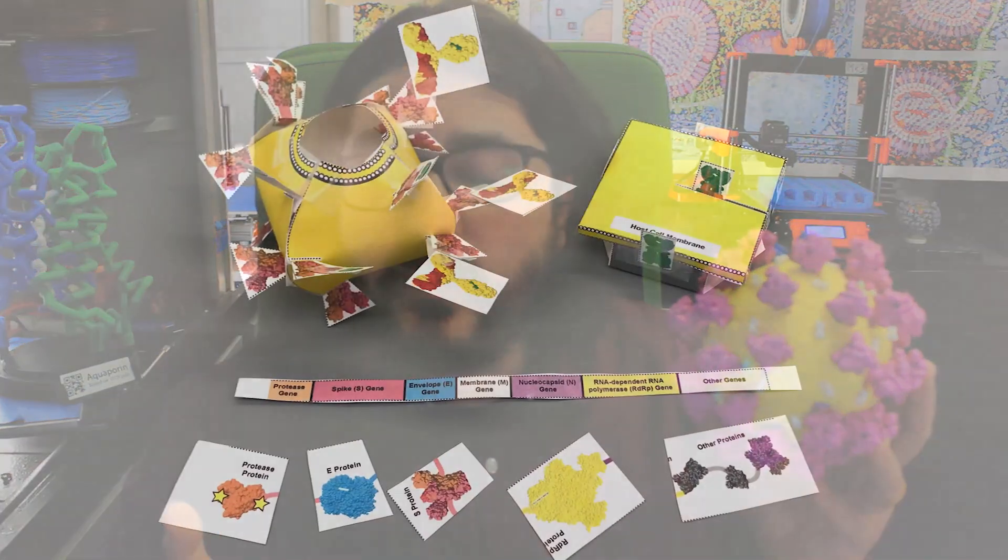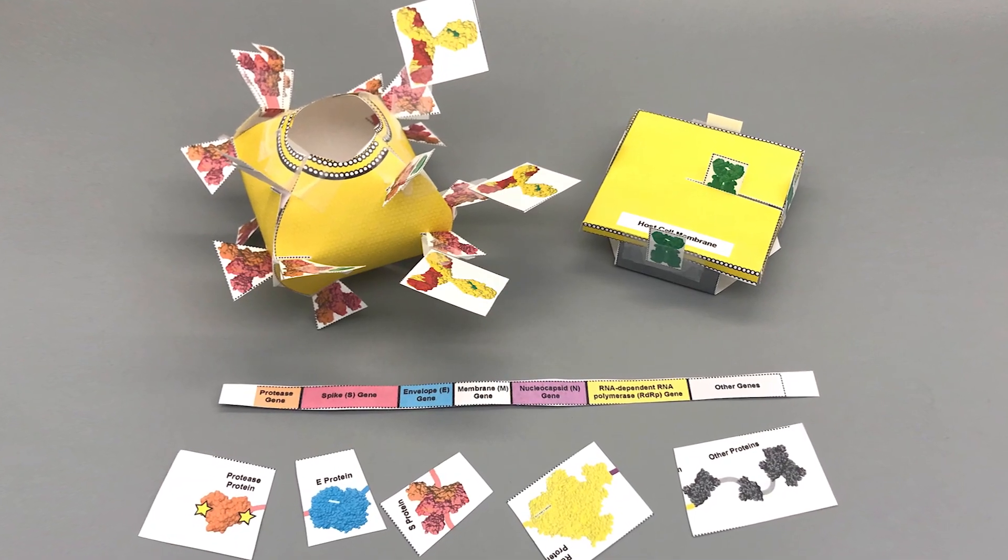So what we've decided to do is create a handful of little paper activities. Essentially you're going to be making the same type of model I have here, but instead of being plastic and made on a 3D printer, it's going to be made of paper and cut out and assembled together.